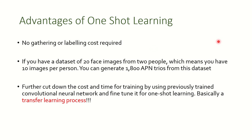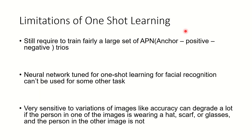What are the major advantages of one-shot learning? First, we do not have any complexity in terms of labeling. If you have a dataset with 20 face images from two people — 10 images per person — we can generate as many as 1800 APN trios from this dataset. Furthermore, we are cutting down the cost and time, which were the key problems with convolutional neural networks.